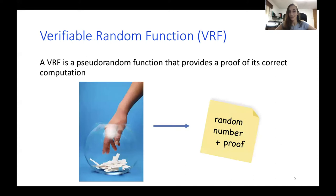A main tool we are using in our work is a verifiable random function, or VRF for short, which is a pseudo-random function that provides a proof of its correct computation. So you can think of someone randomly picking a number, and along with the number comes the proof that this is indeed the number he obtained.